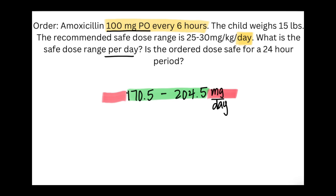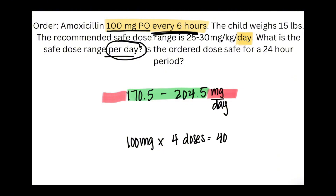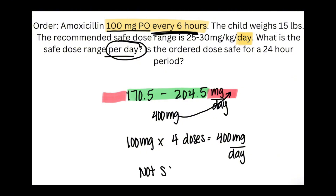So we have an order for 100 milligrams by mouth every six hours, and we need to find the total milligrams received for the entire day. Using the frequency — every six hours — we divide 24 hours by 6, giving us 4 doses in a day. So 100 milligrams times 4 doses equals 400 milligrams per day. We need to see where 400 milligrams falls. Clearly it's way past 204.5 milligrams, so it is in the red zone and deemed not safe.